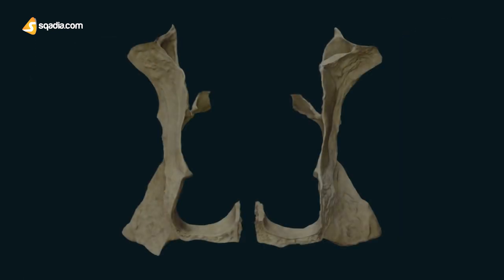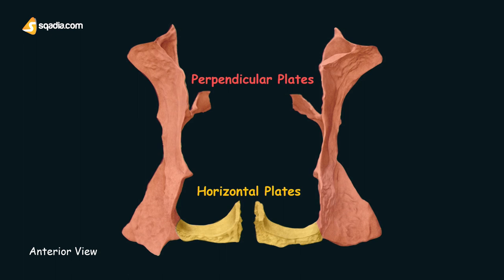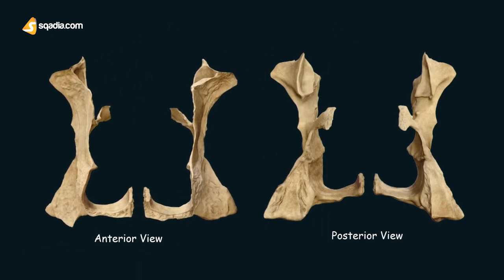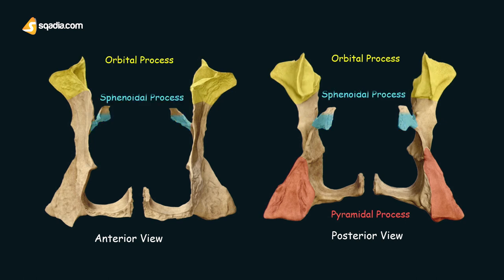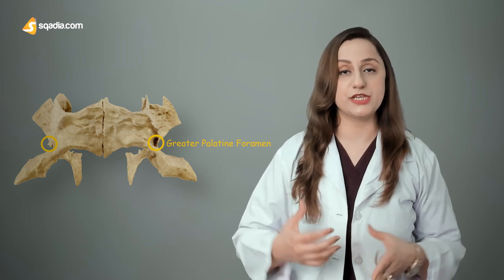Now coming towards its features. The palatine bone is composed of two plates: first the horizontal plate, and then the perpendicular plate, which are connected to form a characteristic L shape. This bone features three processes: the pyramidal, orbital, and sphenoidal.